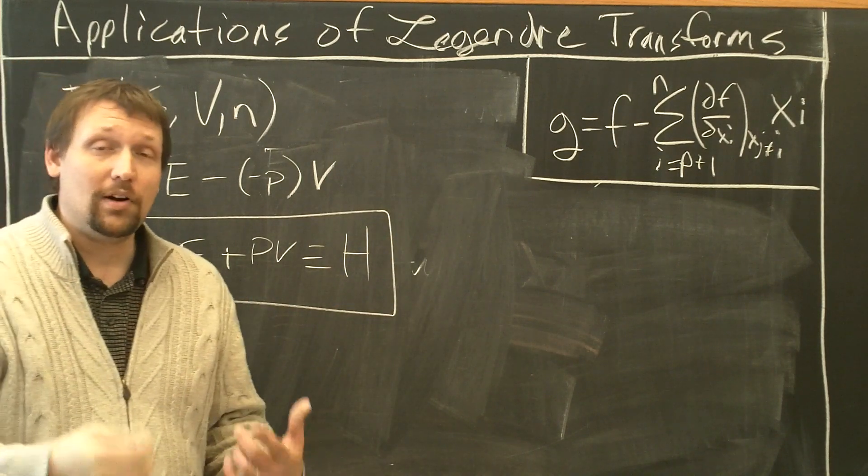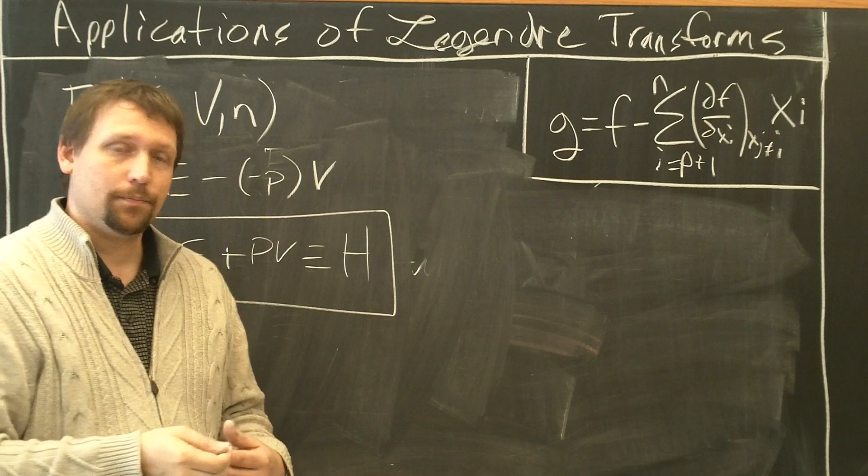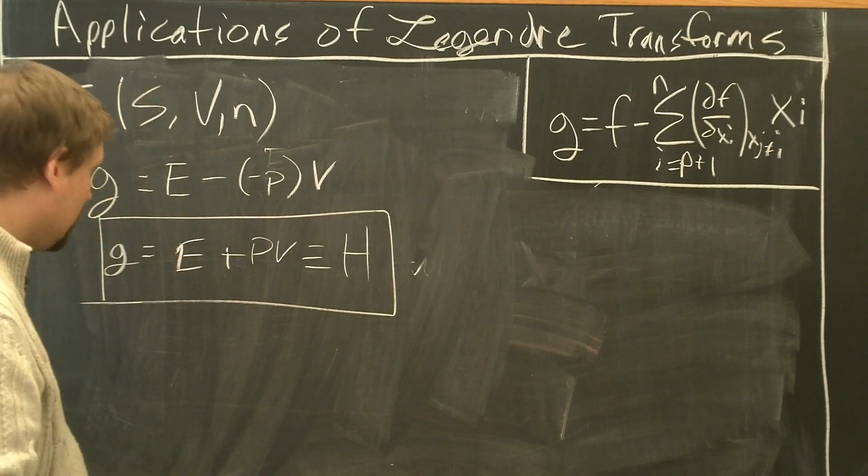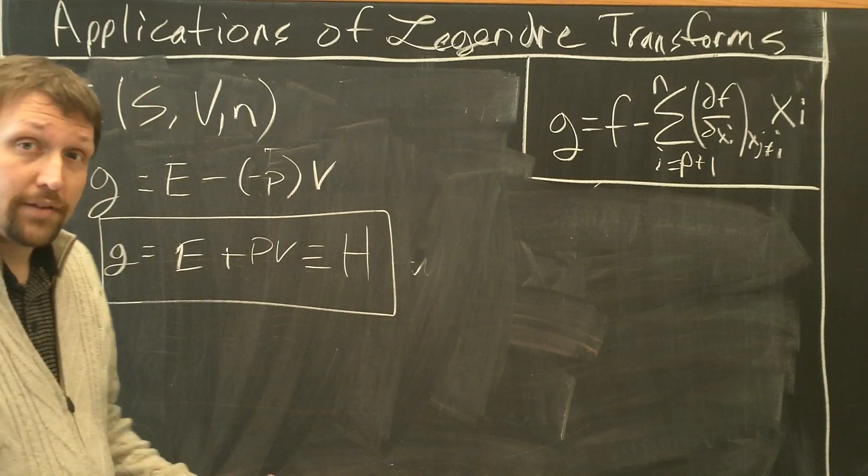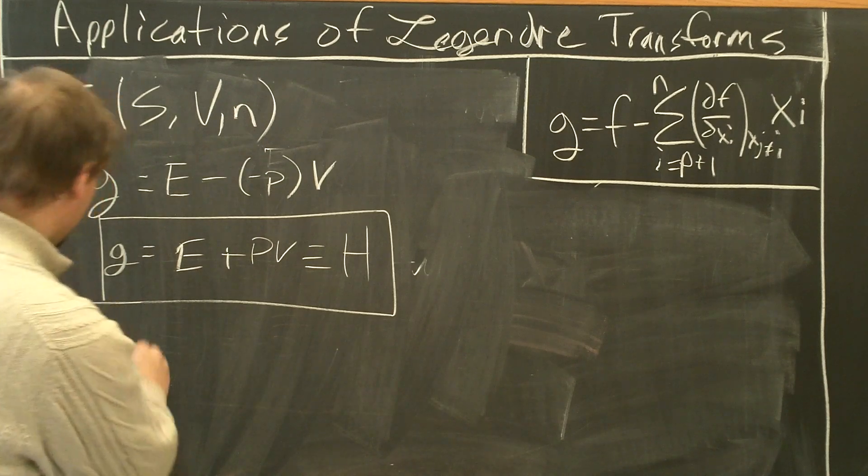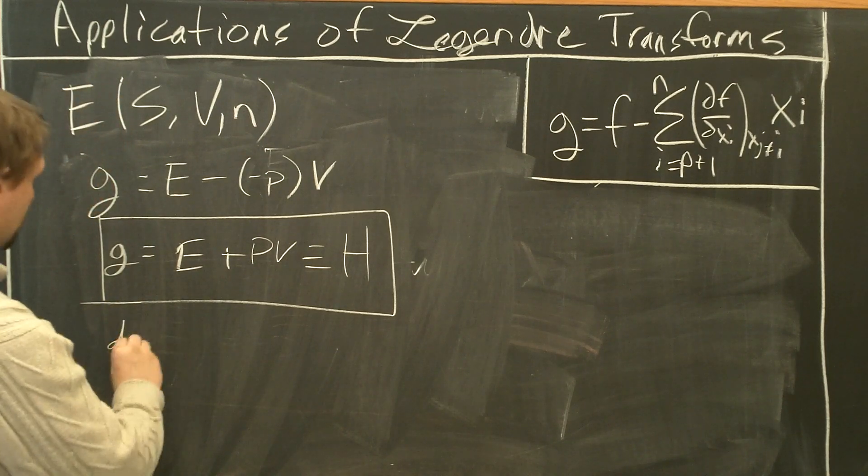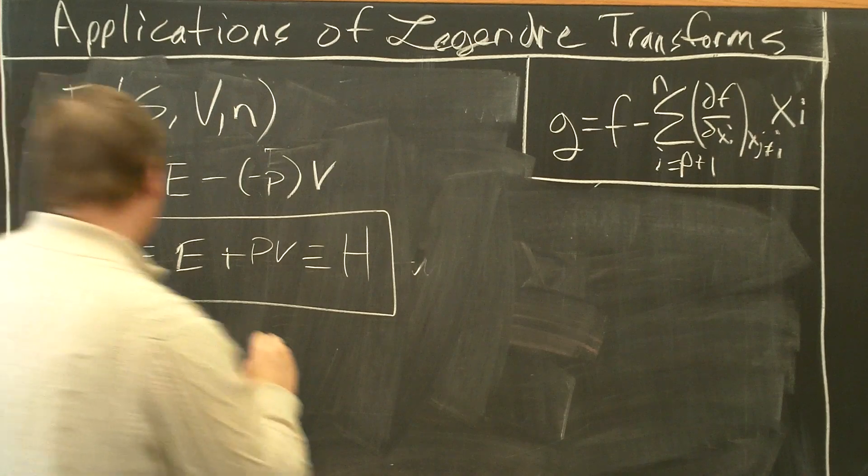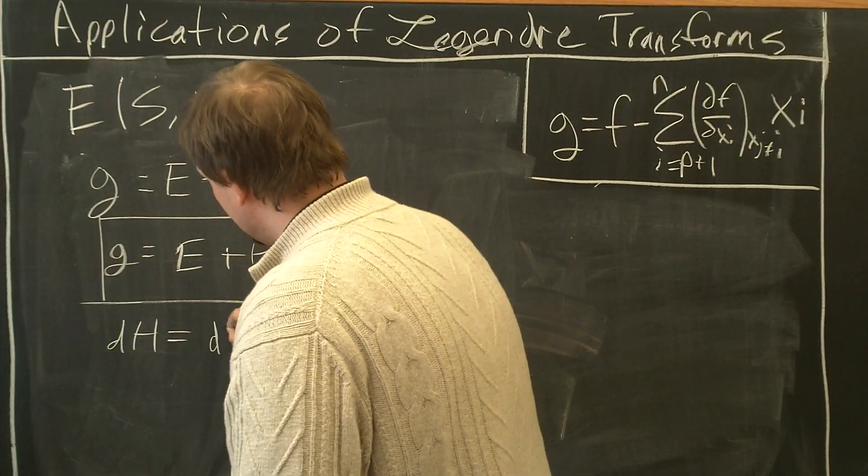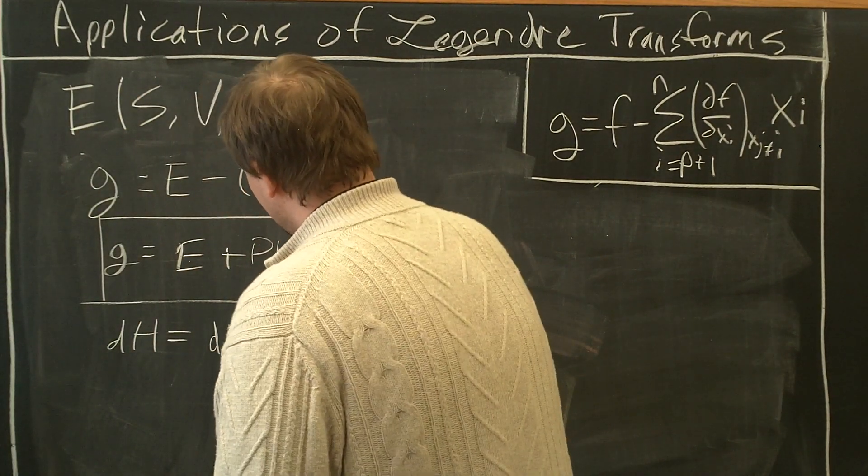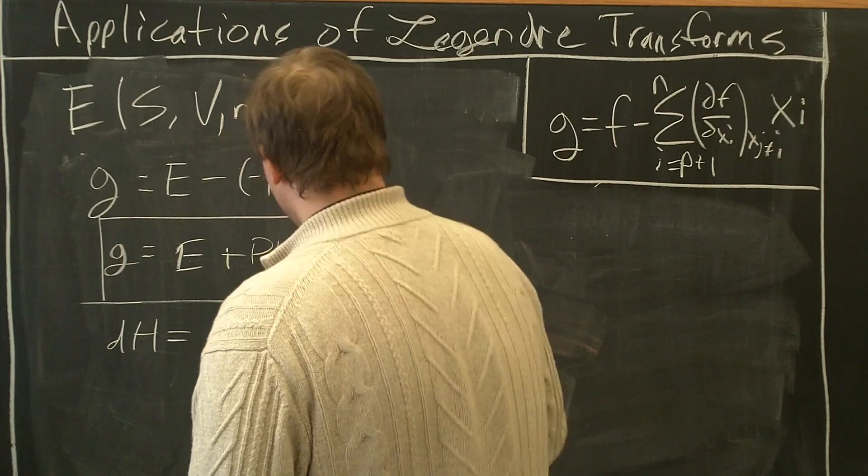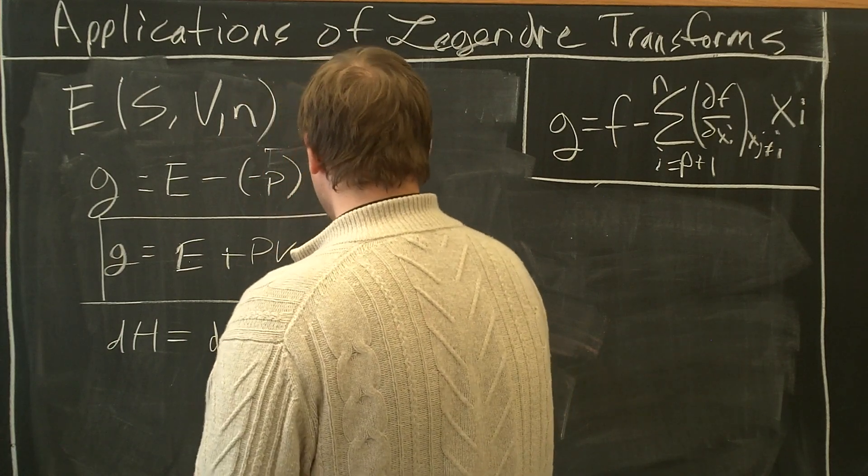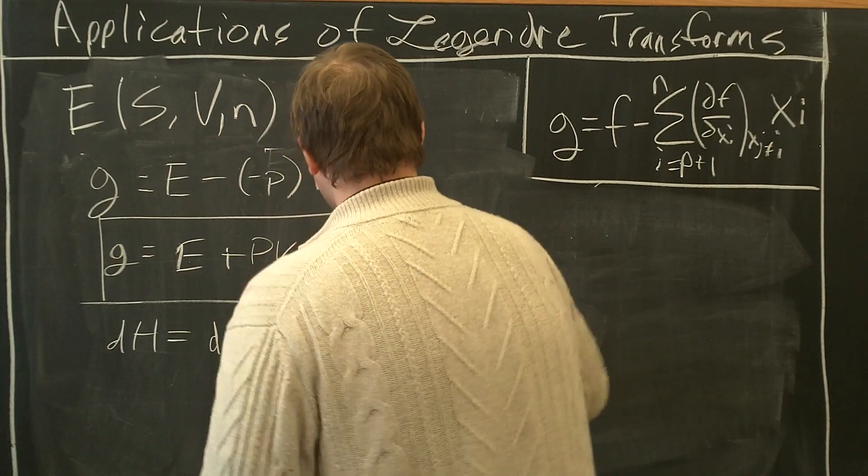Now we have to figure out what enthalpy depends on naturally. So to do this, we take the derivatives like we did before. dH equals dE minus P dV plus P dV plus V dP.